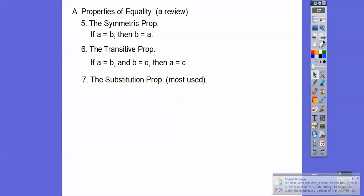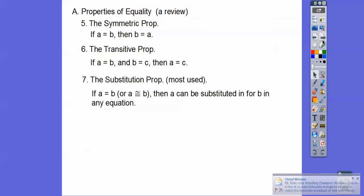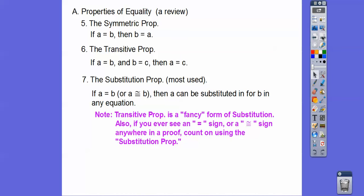The substitution property is another most-used property. It says if A equals B, or A is congruent to B, then A can be substituted in for B in any equation or inequality. The transitive property is just a fancy form of substitution — the difference is that for transitive, the shared term must be picked up on both sides. If you want to be safe, just say substitution property, because substitution encompasses all transitive properties.